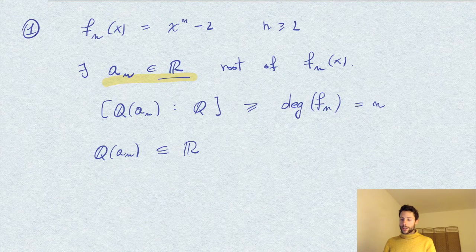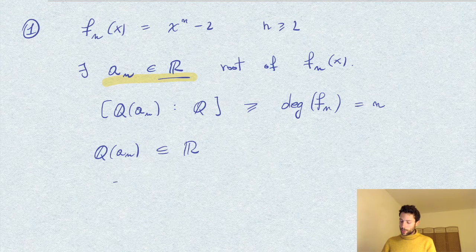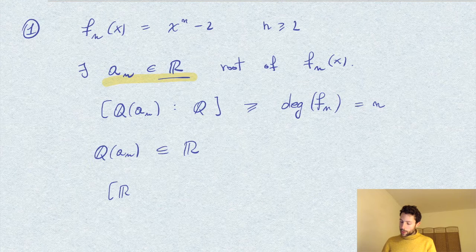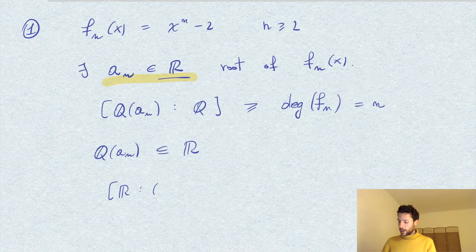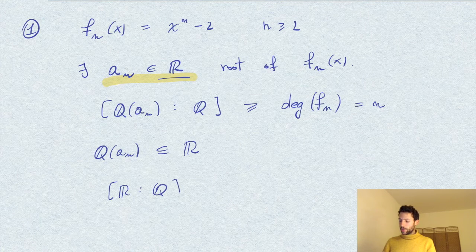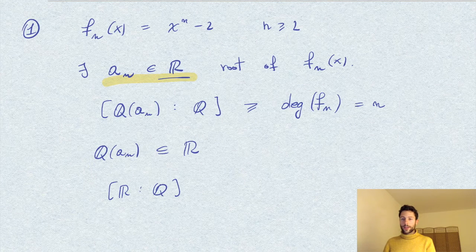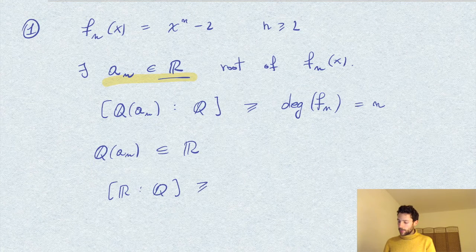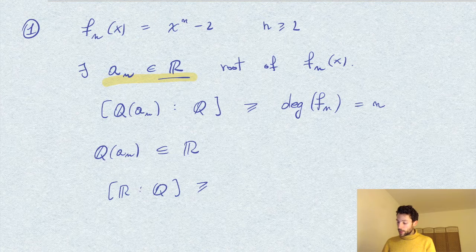And therefore, as an extension, we have that the degree of R over Q would be at least the degree of this extension, so at least n.